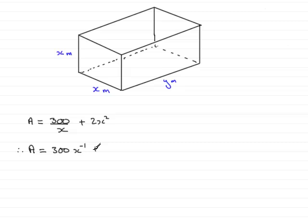The second term is fine, so we leave it as plus 2x². Next, we differentiate A with respect to x. Differentiating the first term gives minus 300x^(-2), reducing the power by 1.